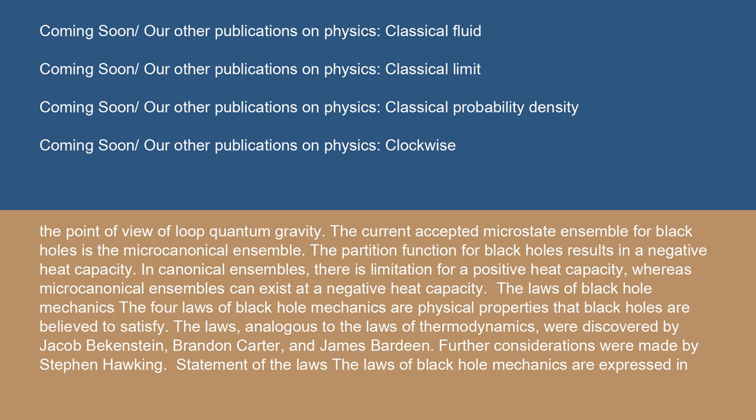The current accepted microstate ensemble for black holes is the microcanonical ensemble. The partition function for black holes results in a negative heat capacity. In canonical ensembles, there is limitation for a positive heat capacity, whereas microcanonical ensembles can exist at a negative heat capacity.